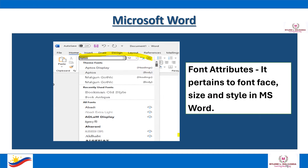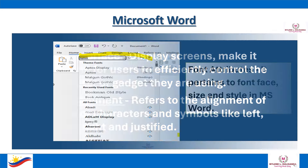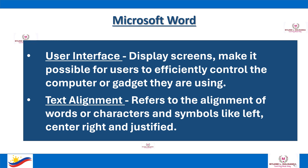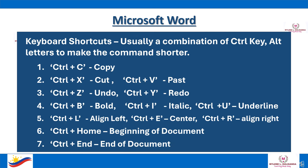Font Attributes pertain to font face, size, and style in MS Word. The User Interface: display screens make it possible for users to efficiently control the computer or device they are using. Text Alignment refers to the alignment of words or characters and symbols — left, center, right, and justified. Keyboard Shortcuts are usually a combination of Control-Key or Alt-letter combinations to make commands shorter. The following are the most commonly used keyboard shortcuts in MS Word.